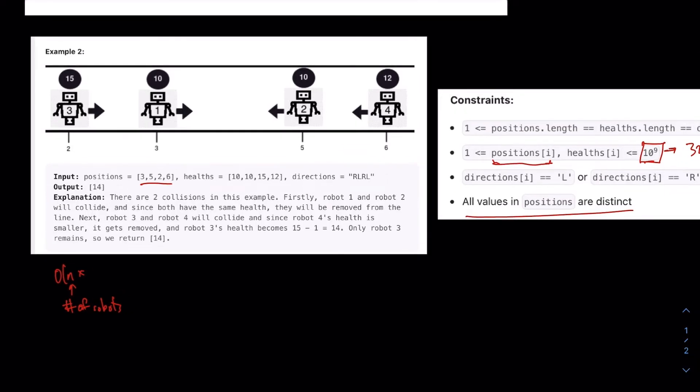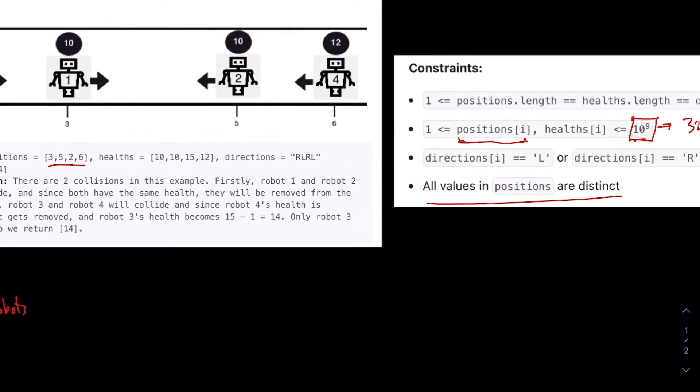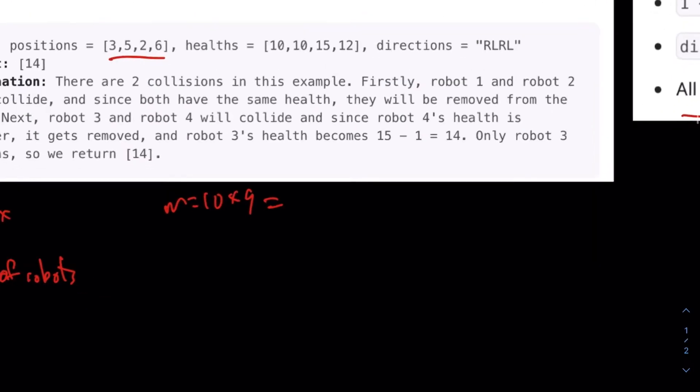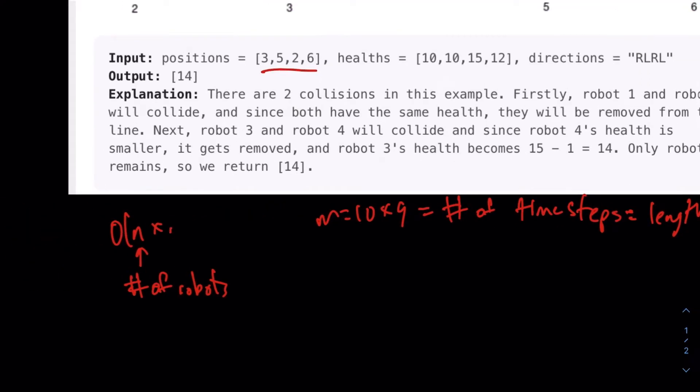Multiplied by the number of times we have to do this time step. In worst case, we would have to do this time step 10 to the 9 times, because each time step the robot moves one time. Or it would be 10 to the 9 divided by 2, but of course that doesn't really make that much of a difference. So if M is equal to 10 to the 9, or M represents number of time steps, which also represents length of number line.